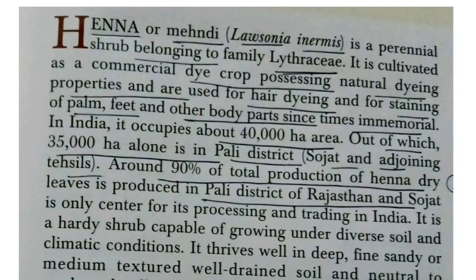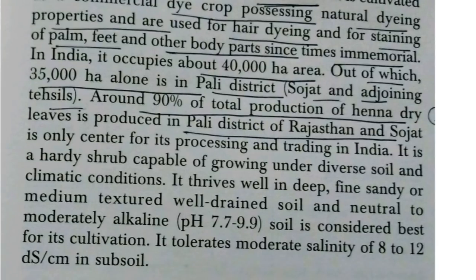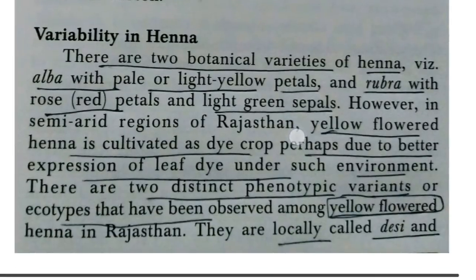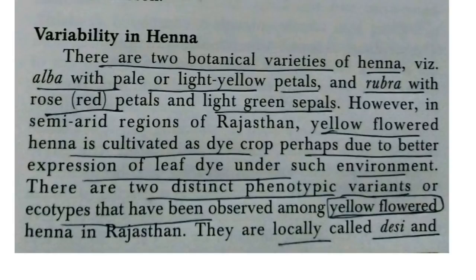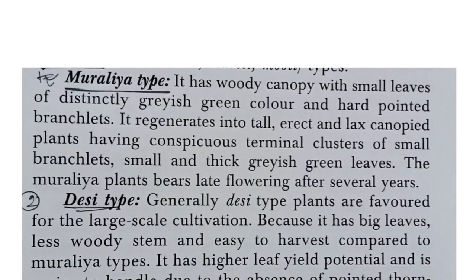Hena, also known as Mehdi, has the scientific name Lawsonia inermis and belongs to the family Lythraceae. It is a good source of natural dye, and about 90% of its produce is in the form of dry leaves. Regarding variability in Hena, there are two types of flowers: light yellow petal flowers called Alba, and red petal flowers called Rubra. The yellow petal flower type is further divided into Murelia type and Desi type.